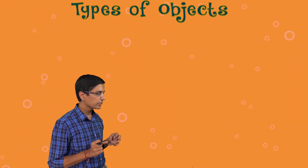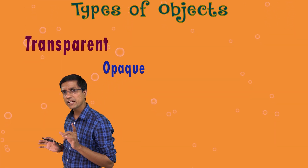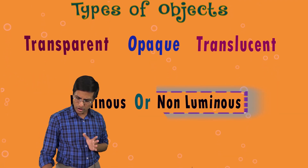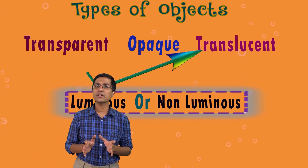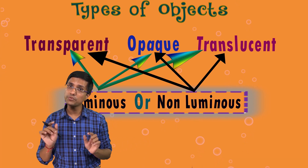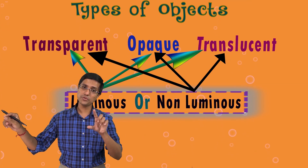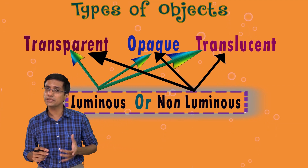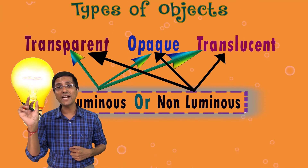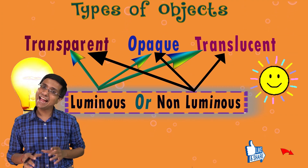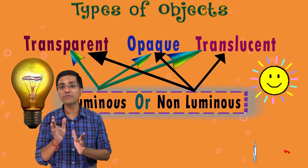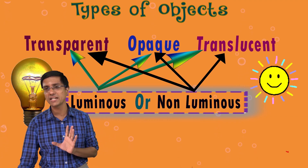With this, we have understood three kinds of objects: transparent, opaque, and translucent. We have also seen that objects can be luminous or non-luminous. All these kinds of objects can either be luminous or non-luminous — they are completely independent. An object can be opaque and luminous, transparent and luminous, or translucent and luminous. For example, a clear light bulb is transparent and luminous, while a whitish frosted light bulb is translucent and luminous. There is no relation between being opaque, transparent, or translucent and being luminous or non-luminous.